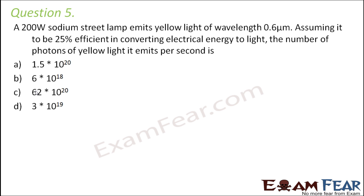Whenever you have a problem, just try to see what values are given in the problem and what are the quantities you need to relate. Here in this problem, you are given power and you are also given the efficiency. We already know that efficiency is always output divided by input. When we talk about efficiency in this case, it would be output power by input power.